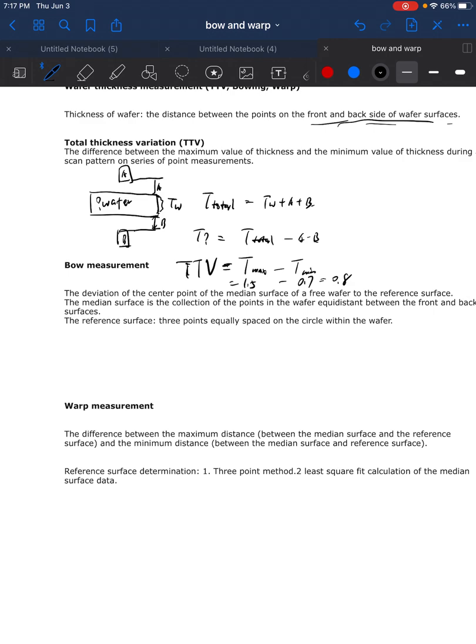The next important concept is called bow. It can be defined as the deviation of the center point of the median surface to the reference surface. Let's say this is the wafer, this is the front plane, this is the back plane, and this will be the median plane.